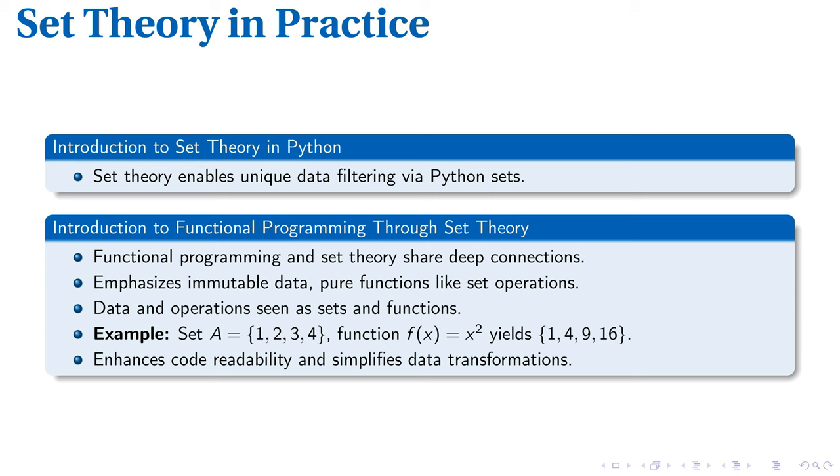Data and operations in functional programming are akin to sets and functions. Consider an example of set A, which contains elements {1, 2, 3, 4}. A function f(x) = x² applied to each element of our set gives us another set, {1, 4, 9, 16}. This illustrates how a function serves as a mechanism to transform one set into another, cementing the significance of set theory principles in programming. Hence, understanding these principles can improve both code readability and ease of data transformation in functional programming.